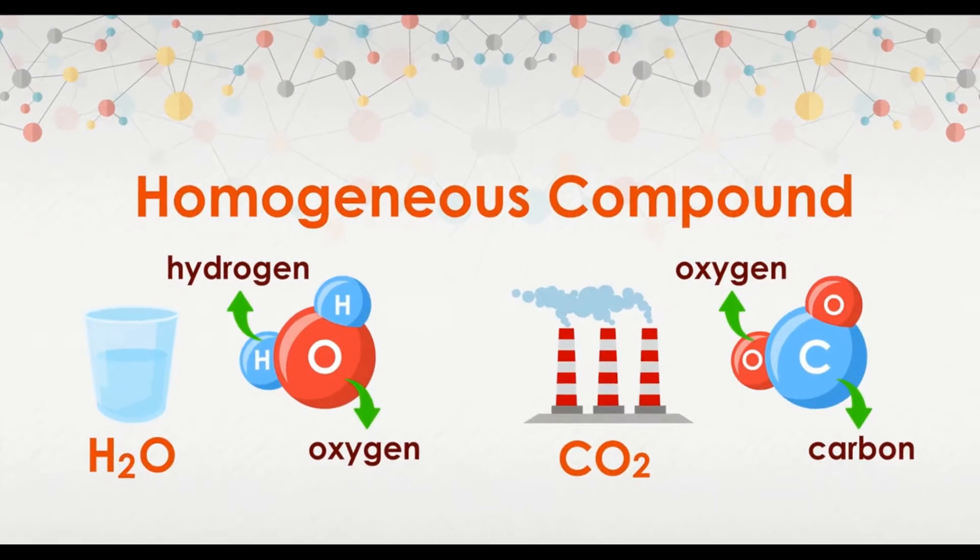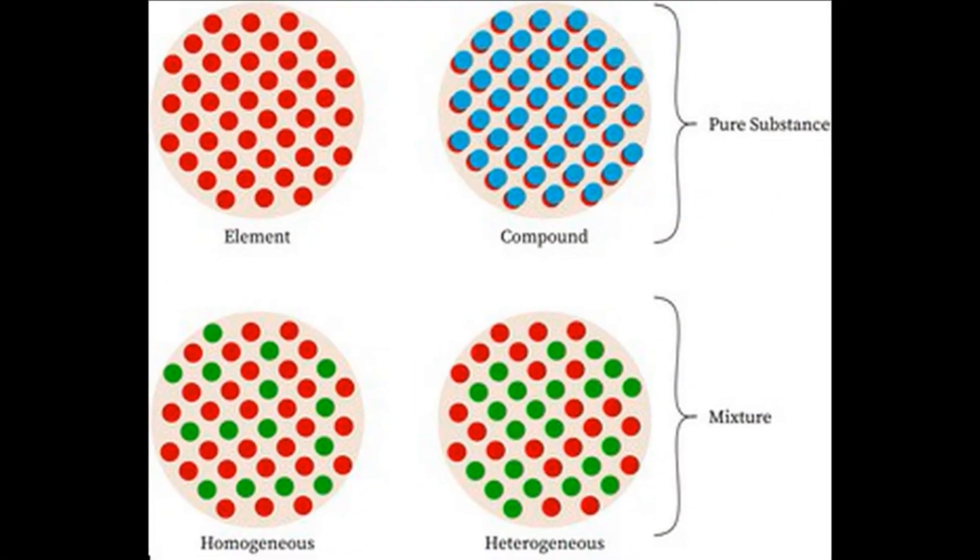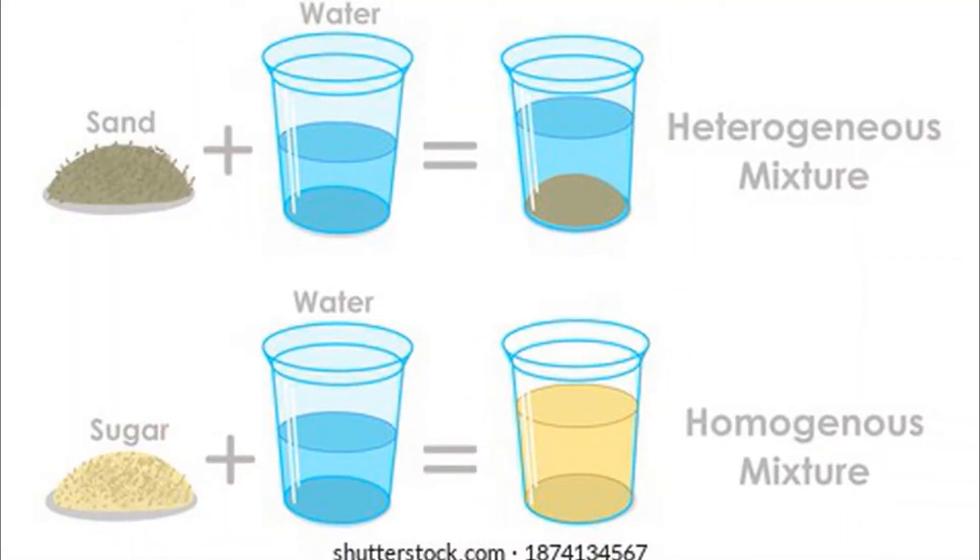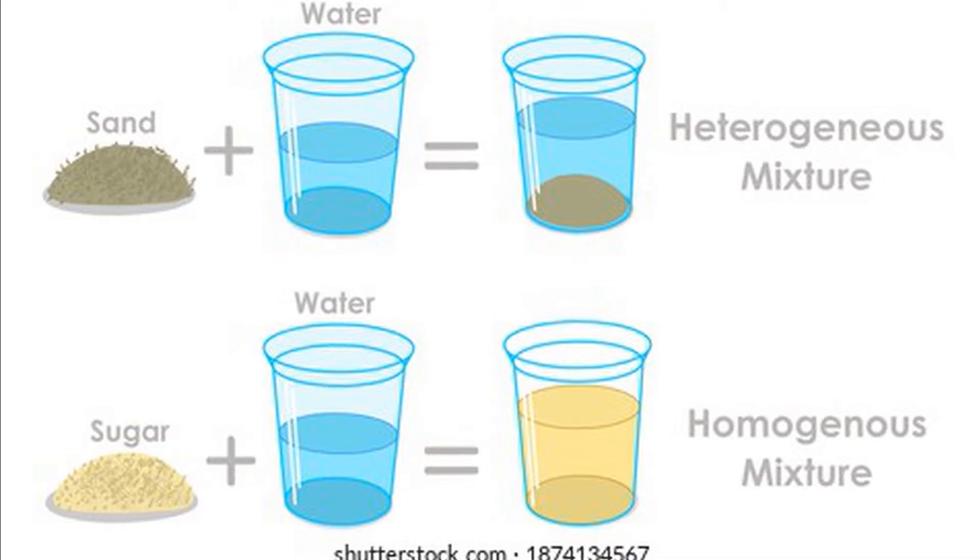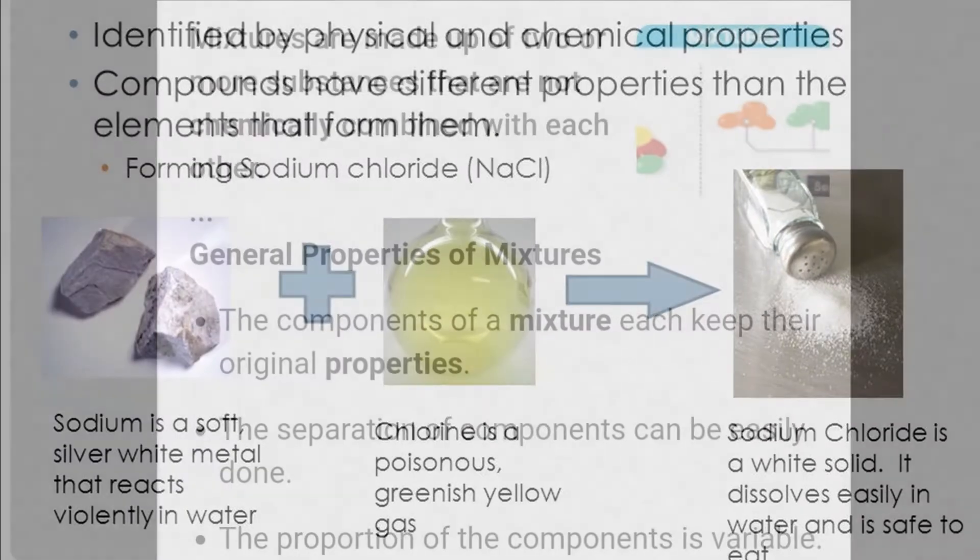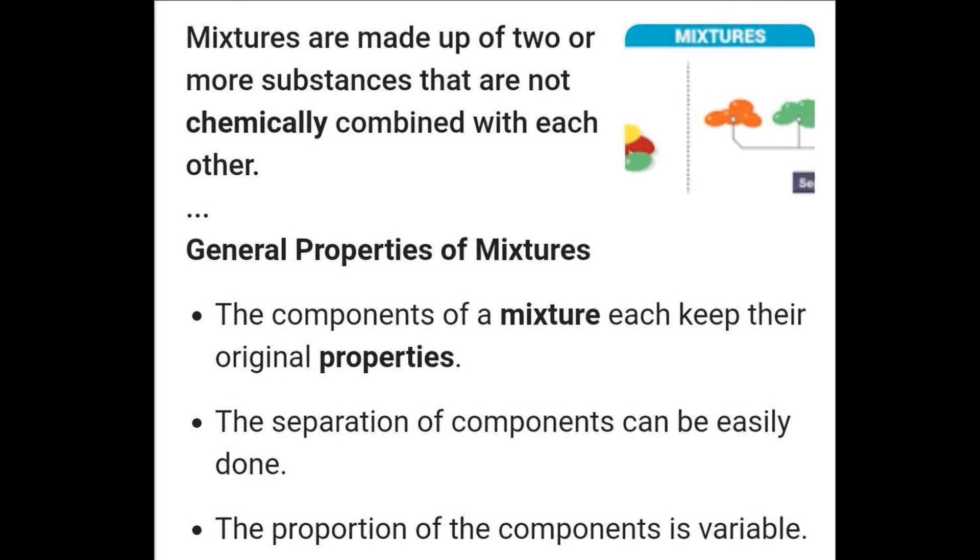Compounds are always homogeneous. The components of a homogeneous substance cannot be seen separately, while mixtures can be homogeneous or heterogeneous. The properties of compounds are different from those of the elements of which they are made, while the components of the mixture retain their original properties.